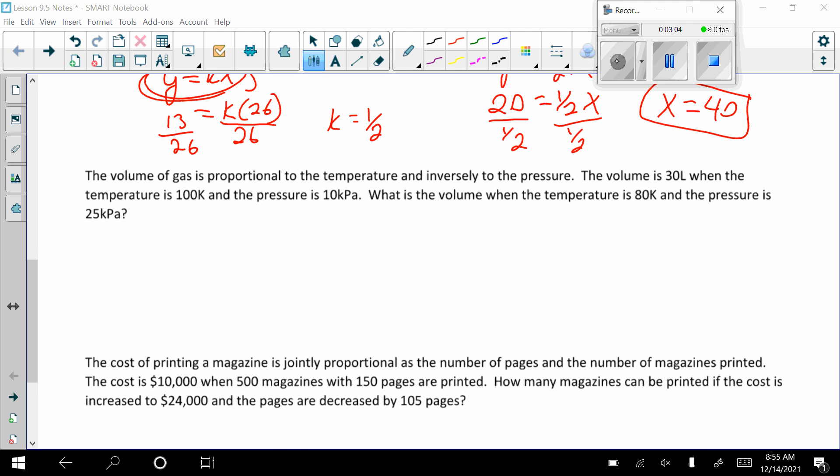Okay, so let's apply this to more of a word problem. The volume of gas is proportional, so that's direct variation, to the temperature and inversely to the pressure. So volume is proportional to the temperature. So K, T. And notice here, K, if we have a fraction, it's always on top. It's never going to be on bottom. So K, T. And let's see inversely to the pressure. So we'll call that P. So we have K, T over P.